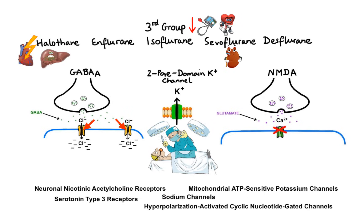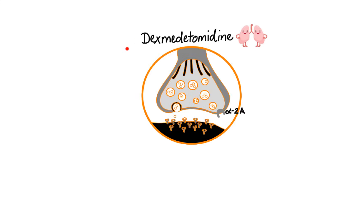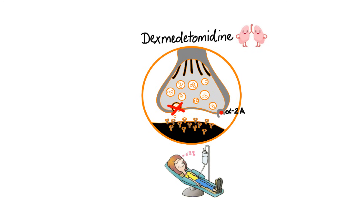There is one more agent worth mentioning that doesn't belong to any of the three groups: dexmedetomidine. Unlike other commonly used general anesthetics, dexmedetomidine has a unique ability to produce sedation and analgesia without the risk of respiratory depression. These effects result from its binding to presynaptic alpha-2-adrenergic receptors of subtype 2A, located in the brain and spinal cord. Action on these receptors inhibits the release of norepinephrine, terminating the propagation of pain signals and inducing light sedation. The most common side effects are bradycardia and hypotension, as well as transient hypertension due to weak peripheral alpha-1 receptor agonist activity.